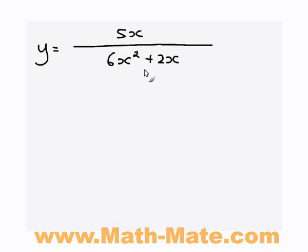The Quotient Rule is a useful rule in differentiation to use when you've got one function divided by another function. For instance, in this case I've got the function 5x on the top and I've got it divided by another function 6x squared plus 2x on the bottom.